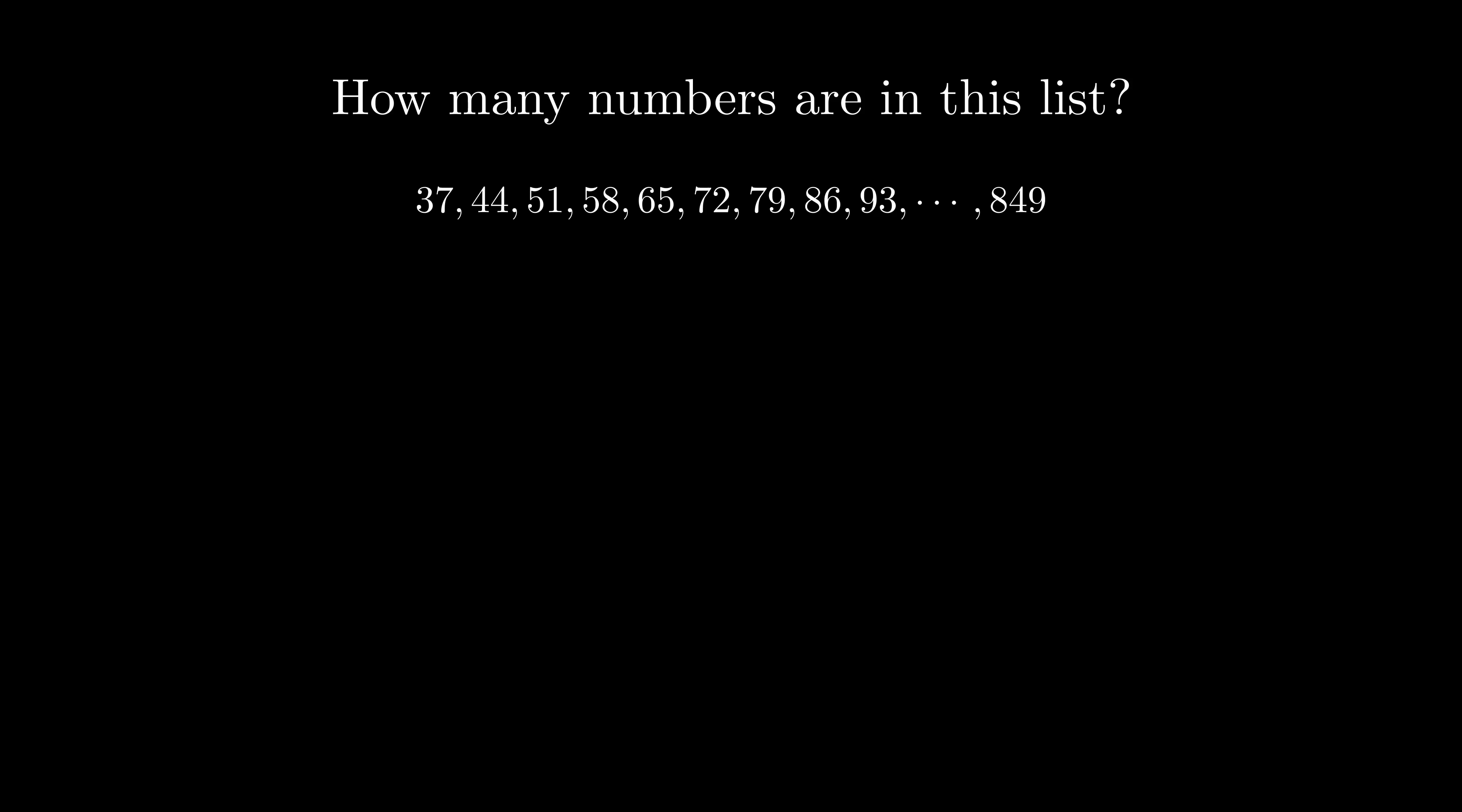Now let's take a look at how we could solve it much more easily using bijections. We first take each number in our first list and subtract 37, forming a second list. This forms a bijection between the first list and second list, because each number in the first list can be paired with the number that is 37 less in the second list. Notice that we can count this new list instead of the original list, as they have the same amount of numbers, and we know this thanks to our bijection. We can then continue to make another bijection by dividing all of our numbers by 7.